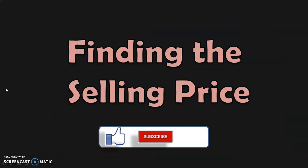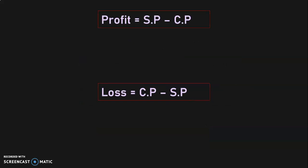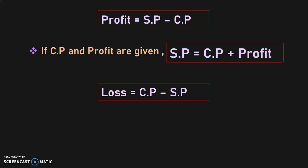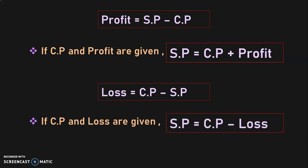The next topic is how to find the selling price when the cost price and profit or loss is given. We already know: profit equals SP minus CP, and loss equals CP minus SP. If cost price and profit are given, then selling price equals cost price plus profit. If cost price and loss are given, then selling price equals cost price minus loss. Remember these formulas — they are derived from the profit and loss formulas.